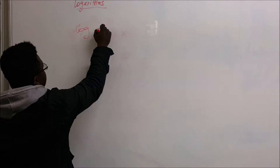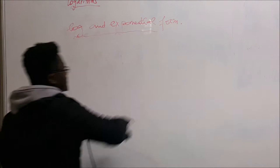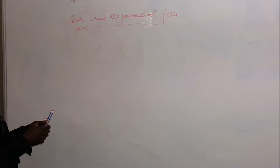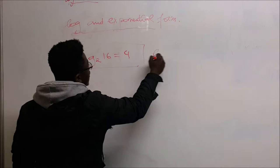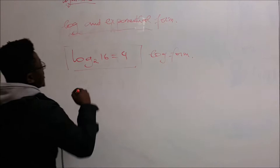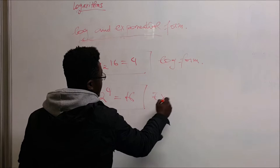So if we are talking about logarithmic and exponential form, let's discuss. When we are talking about logarithmic form, if we have log base 2 of 16, we know it's going to give us 4 — that's called logarithmic form. Exponential form is actually to express the power to which the base is raised to give 16. That's called exponential form.